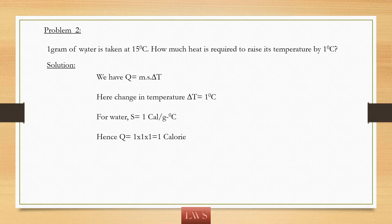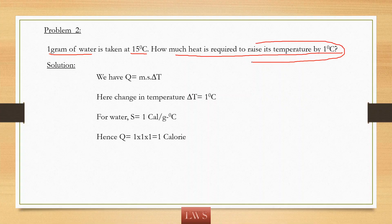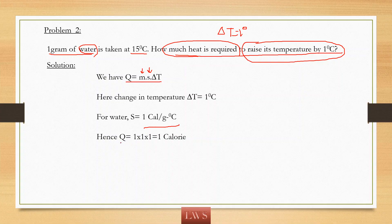Let us solve another problem — please carefully listen, as we need a useful result from it. We are taking 1 gram of water whose initial temperature is 15 degree Celsius. How much heat is required to raise its temperature by 1 degree Celsius? So delta T equals 1 degree. Using Q equals M times S times delta T: mass is 1 gram, specific HEAT of water is 1 calorie per gram degree Celsius, and delta T is 1 degree C. So Q comes out to be 1 calorie.